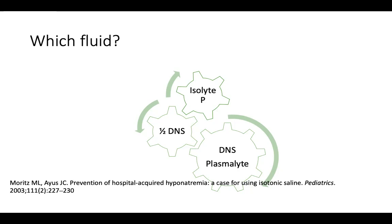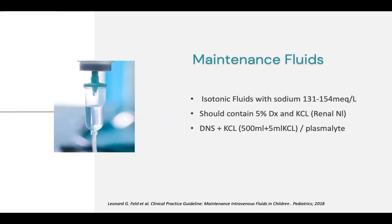There are situations where you may prescribe half BNS, especially for small babies — particularly those with failure to thrive or less than 5 kg — but this is also not routinely recommended. What is routinely recommended is a fluid like BNS or Plasmalite, meaning an isotonic fluid with a sodium between 131 to 154 milliequivalents per liter. This recommendation applies for babies from 28 days to 18 years of age. Sodium of 131 corresponds to something similar to Ringer's lactate, and 154 to normal saline.